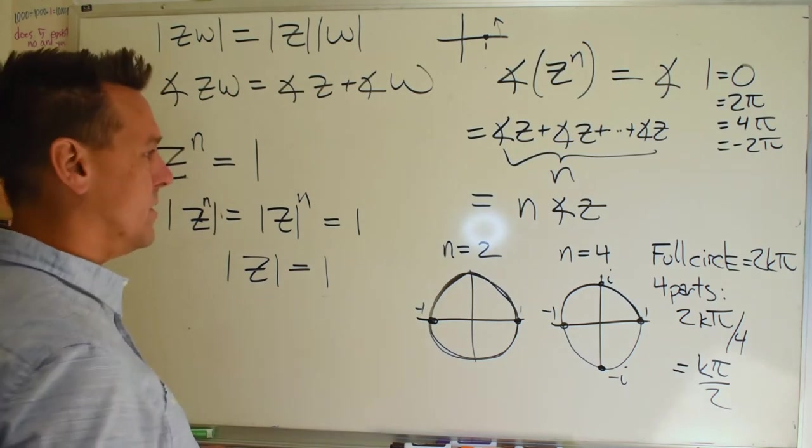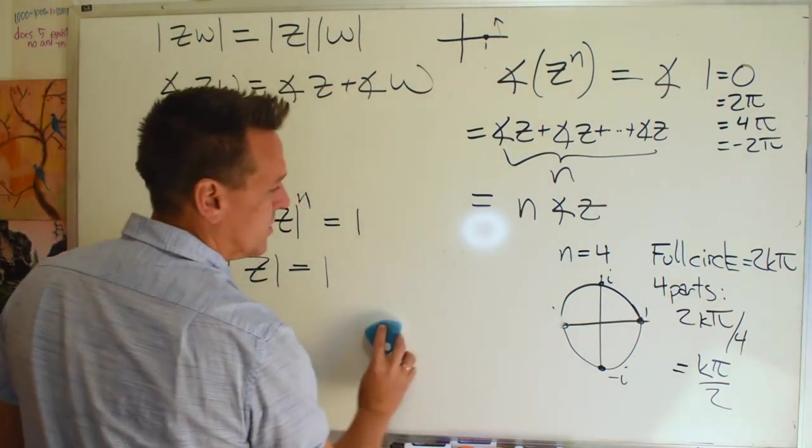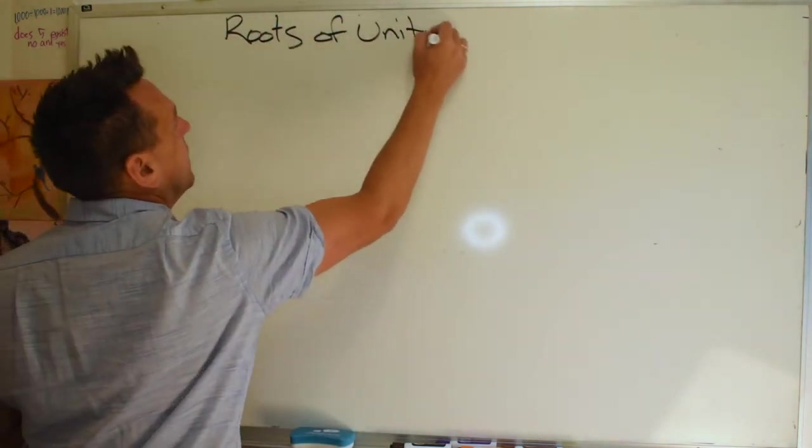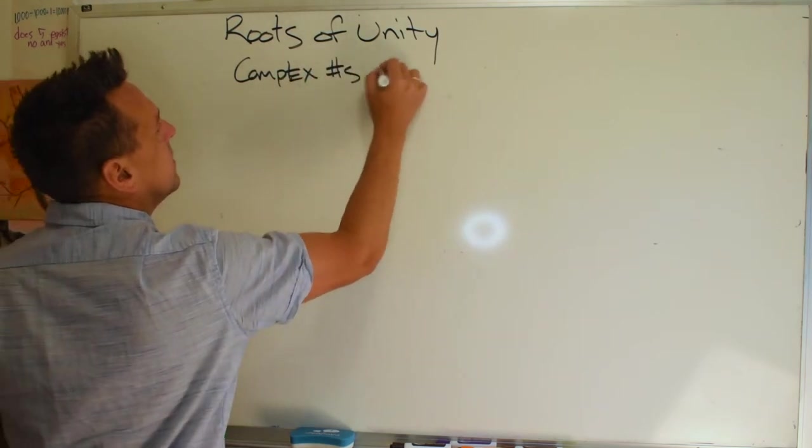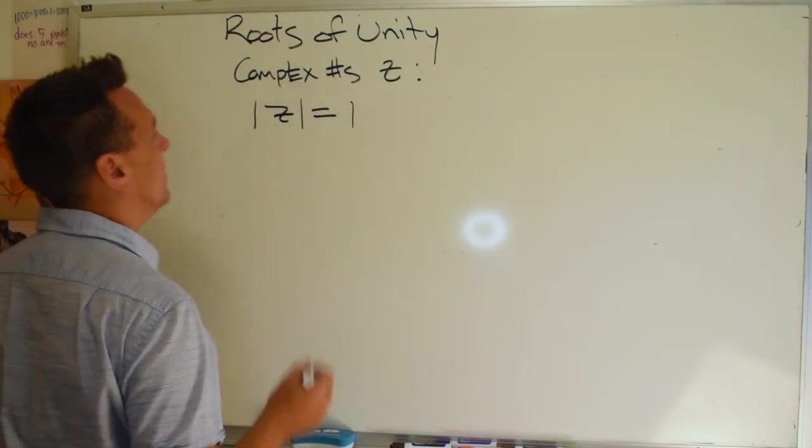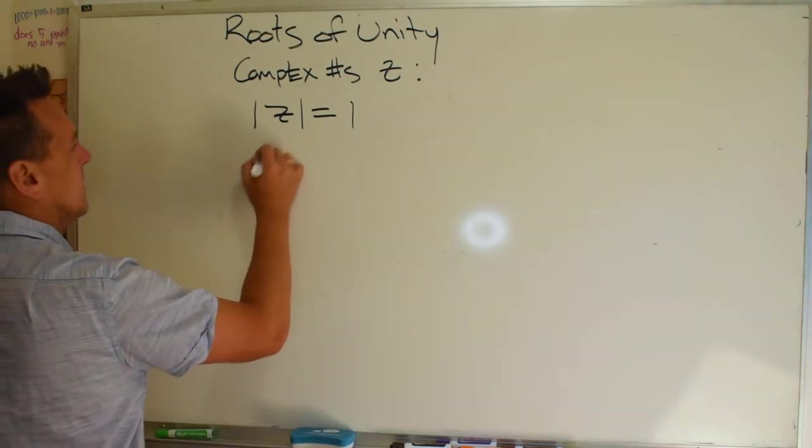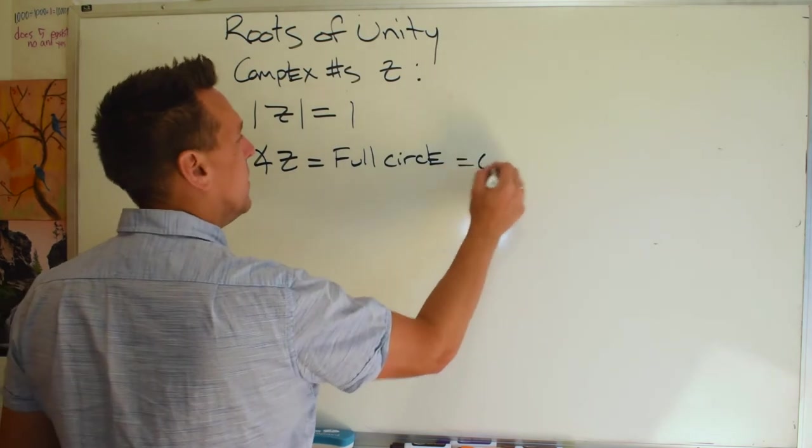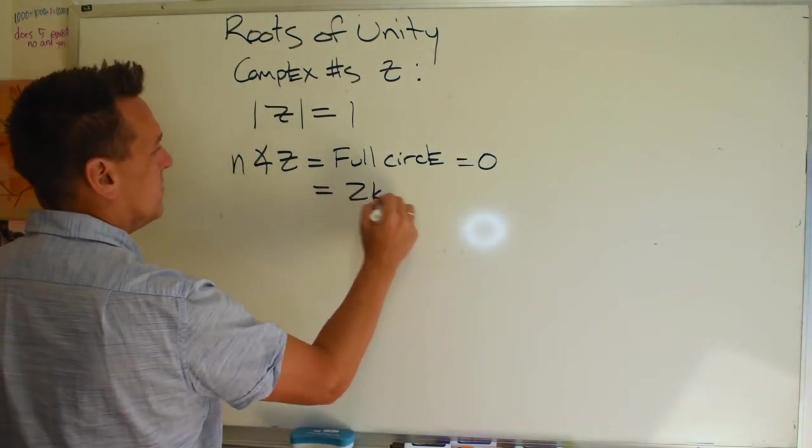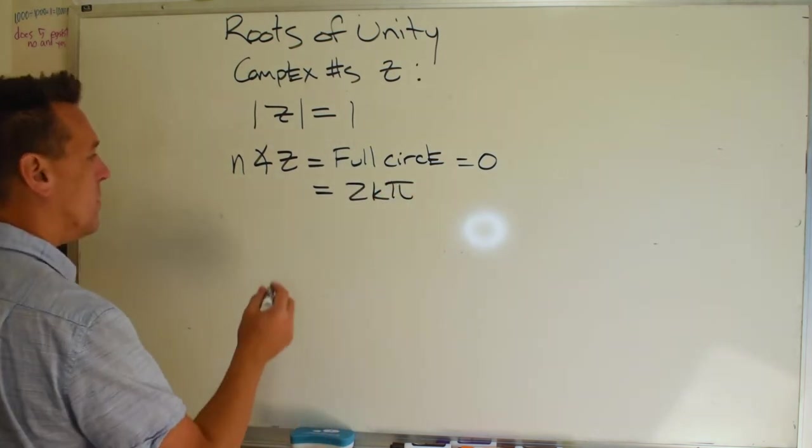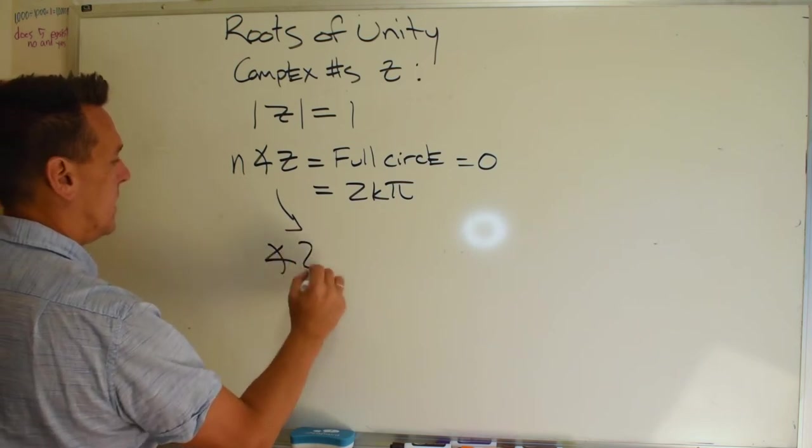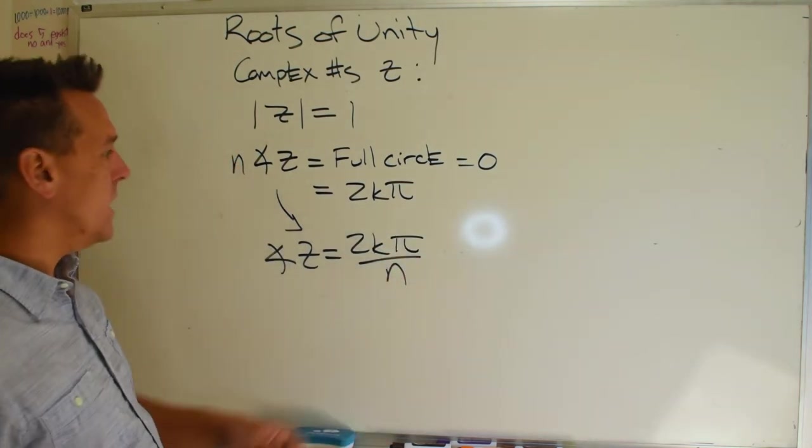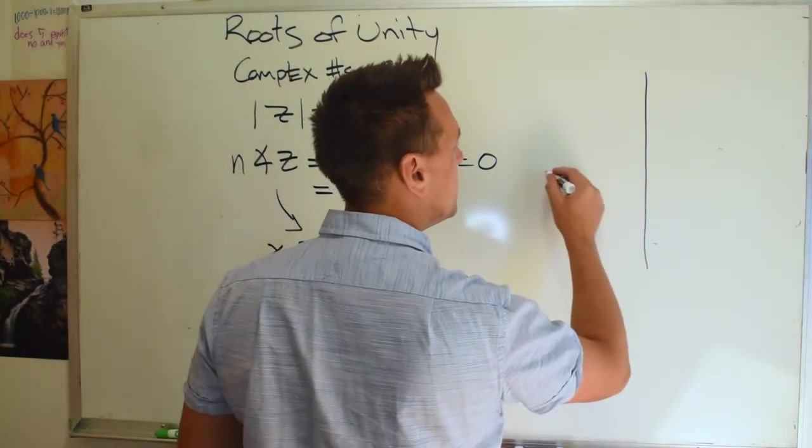It's going to be complex number z, so that the magnitude of z equals one, and the angle of z, n times it, is going to be a full circle. And we can think about that as zero and be really flexible. We can think about that, if we want to be good algebraists, as 2kπ. And then that lets us say that the angle of z equals 2kπ over n. For any n, this gives us n points that geometrically live equally spaced around that circle.